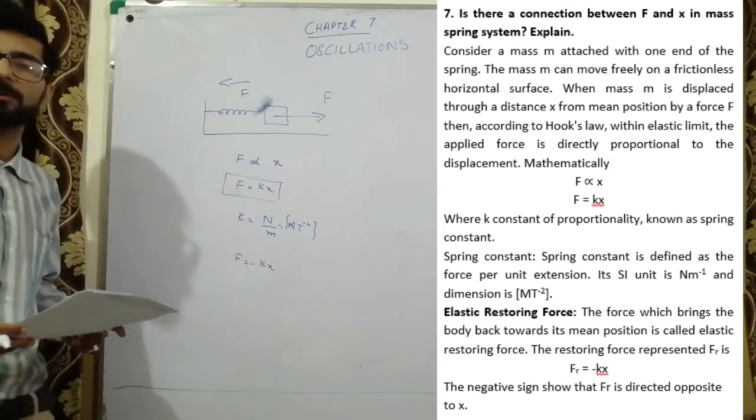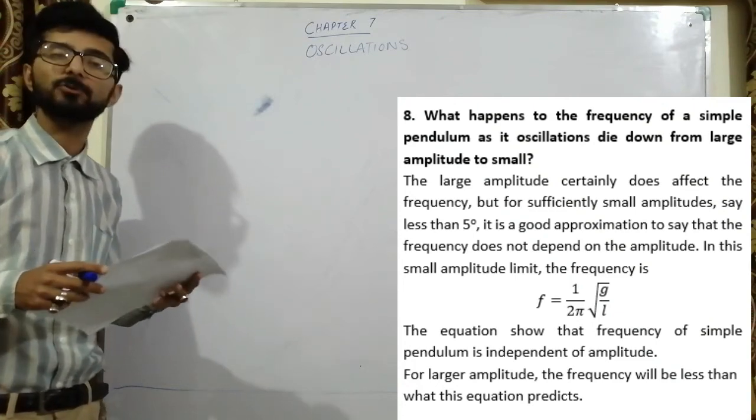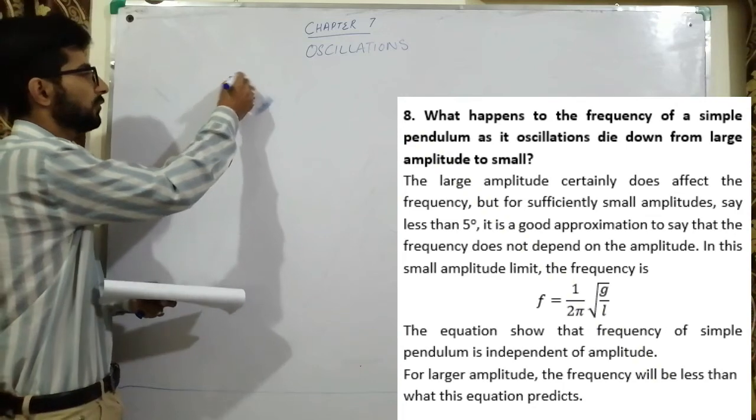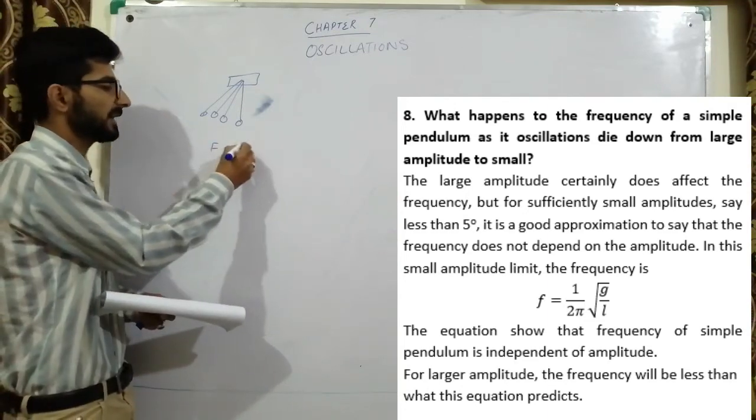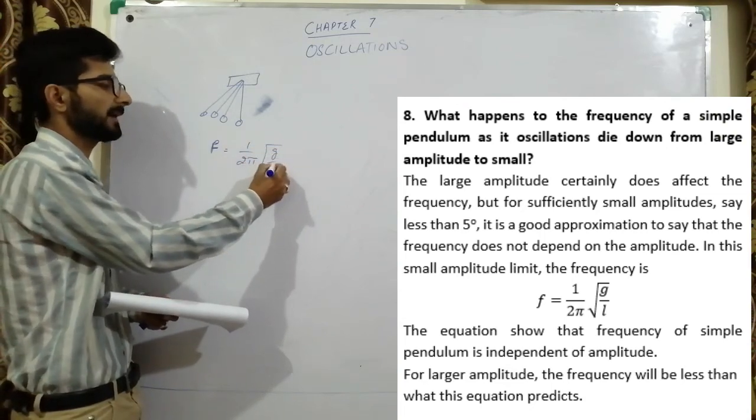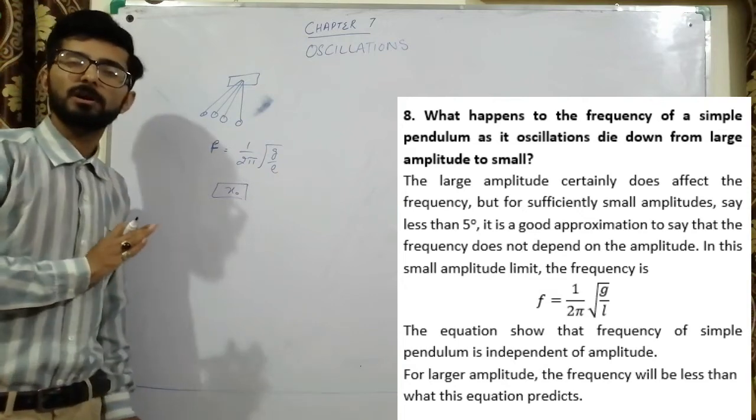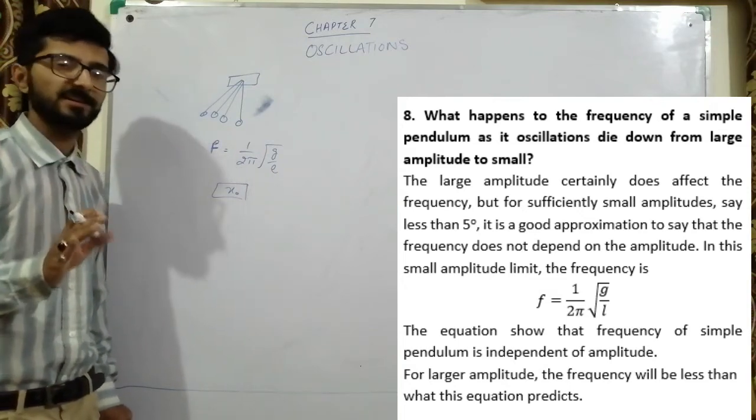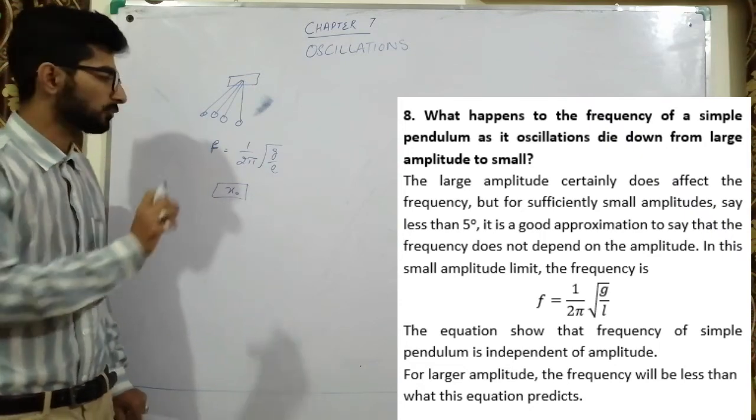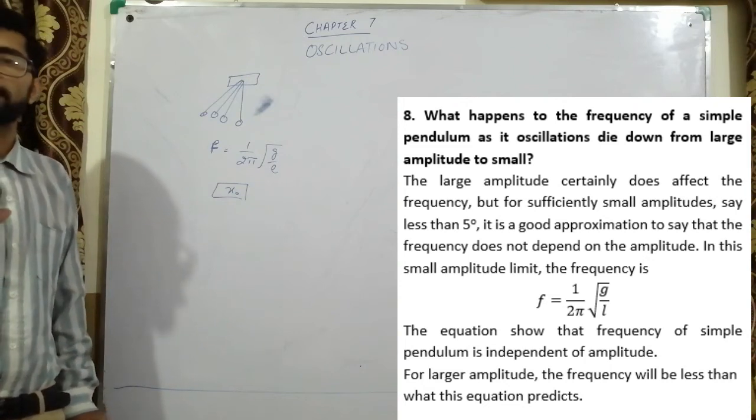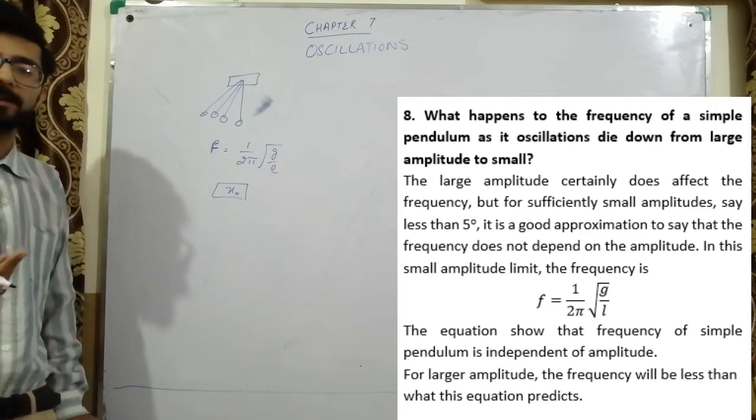Question number 8: What happened to the frequency of simple pendulum as it oscillates and dies down from large amplitude to small? Frequency f = 1/(2π)√(g/l). According to the formula, there is no effect of amplitude x₀. If x₀ is less or more, the frequency does not depend upon it by formula. But in reality, there is a little effect due to frictional forces.